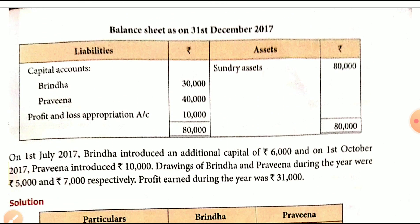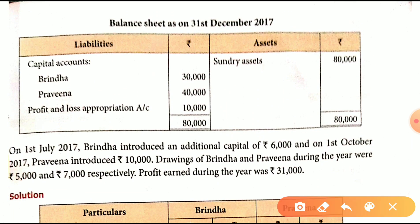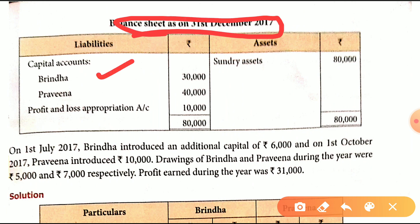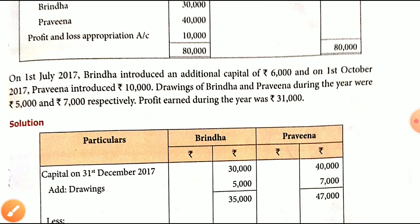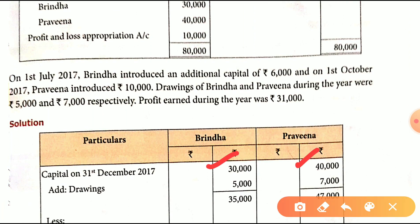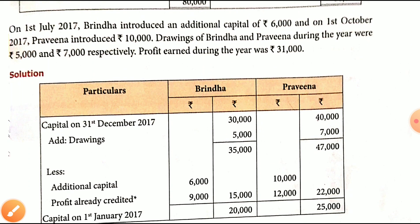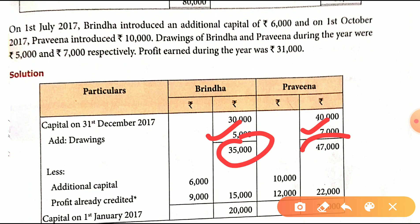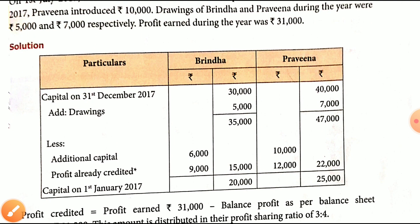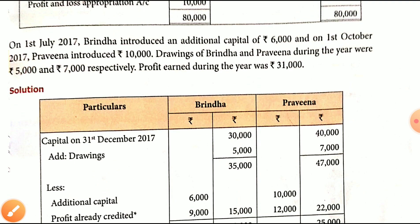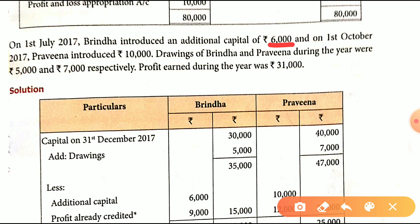We will see: Brinda's opening capital is 30,000 and Praveena's is 40,000. Then Brinda's additional capital is 6,000 and Praveena's additional capital is 10,000.